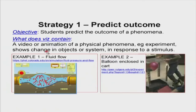We will now look at another example. This one uses an image and a video — also examples of visualization. In the second example, you can see a man's hands pushing a clear plastic cart with a balloon suspended inside it. The man gives the cart a jerk to the left, and students observe what happens to the balloon — does it stay, move to the left, move to the right?